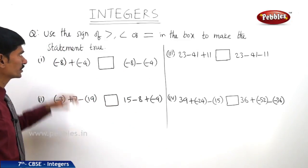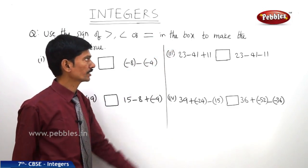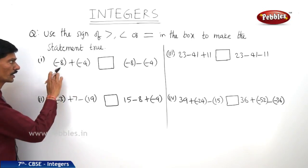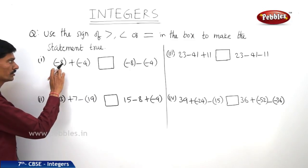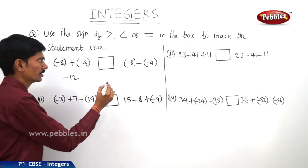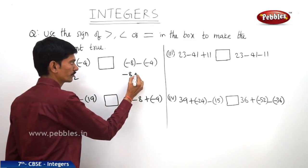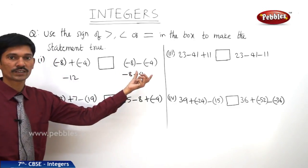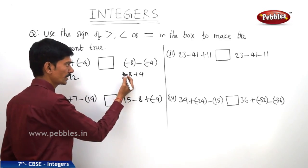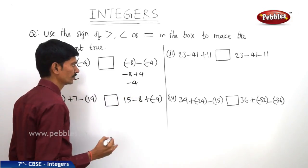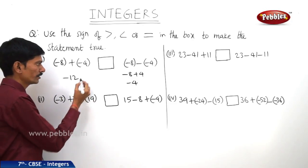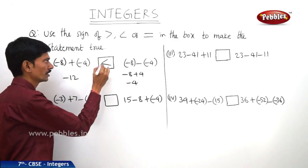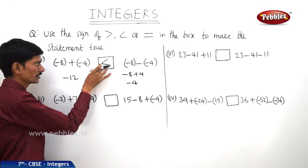Let us solve the next question: Use greater than, less than, or equal to sign in the box to make the statement true. First question — LHS: minus 8 plus (minus 4). Since both integers are negative, we add them, giving minus 12. On the RHS: minus 8 minus (minus 4) becomes minus 8 plus 4. Since the integers have different signs, we subtract: 8 minus 4 is 4, and the bigger number has a minus sign, so we get minus 4. Comparing minus 12 and minus 4, minus 12 is smaller than minus 4, so LHS is less than RHS.